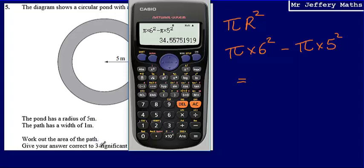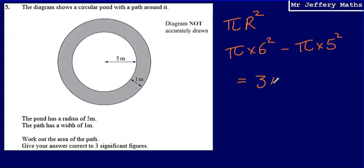We're asked to give it to three significant figures. So three significant figures is going to give us 34.6. So that's going to give us 34.6, and that's meters squared.